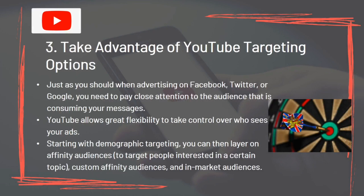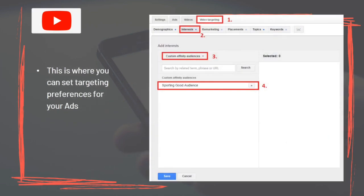Tip 3: Take advantage of YouTube targeting options. Just as you would when advertising on Facebook, Twitter, or Google, pay close attention to the audience consuming your message. YouTube allows great flexibility to control who sees your ads. Starting with demographic targeting, you can layer on affinity audiences to target people interested in a certain topic, custom affinity audiences, and in-market audiences.